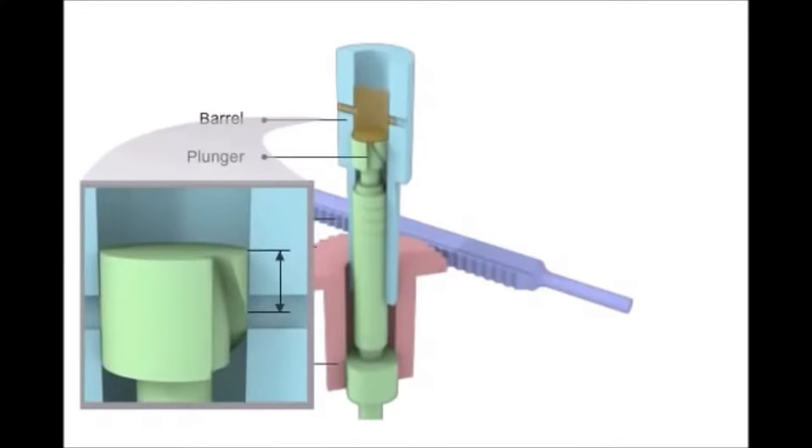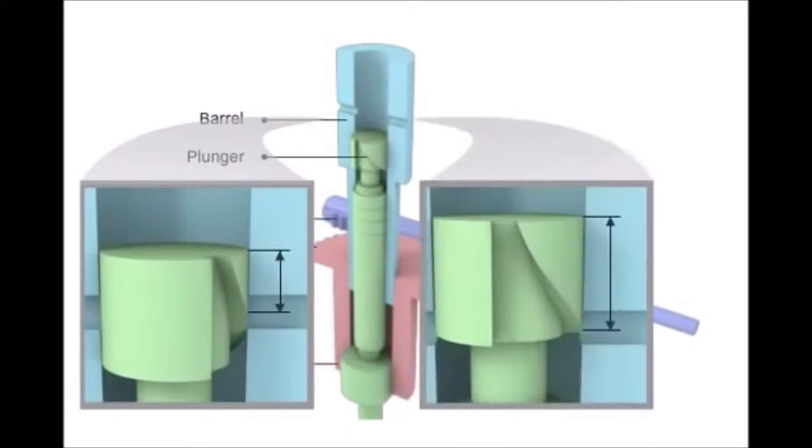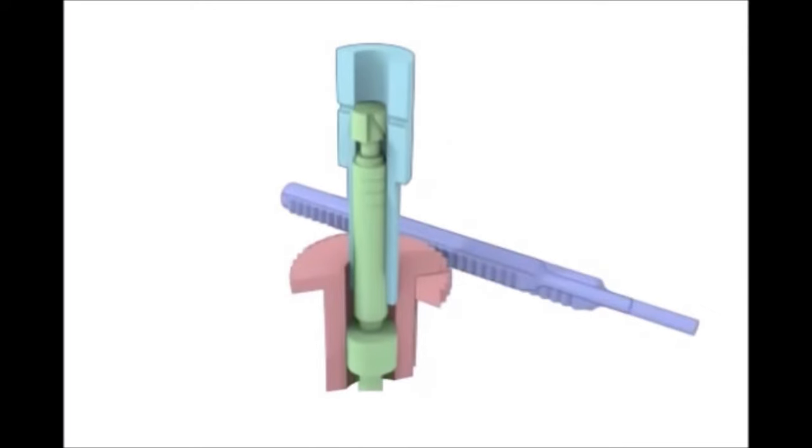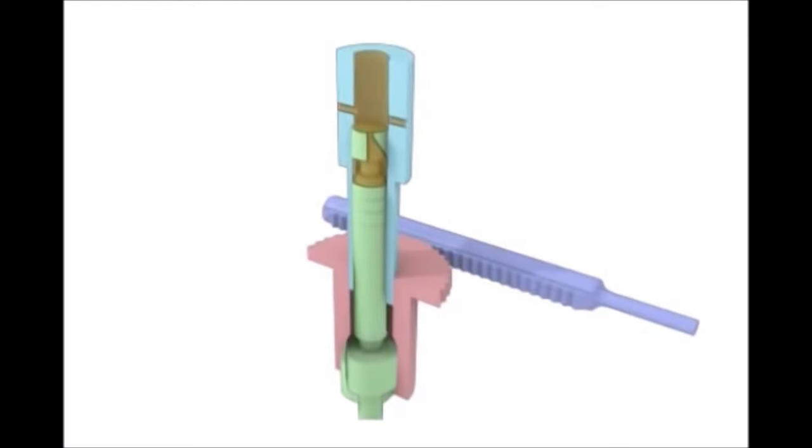Now when we rotate our plunger, the helix becomes longer. So at the bottom of the stroke again, fuel enters the spill port filling above the plunger, and as the plunger moves up we create pressure.